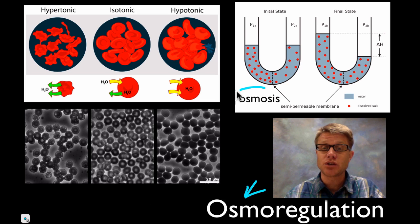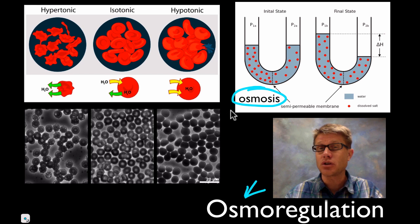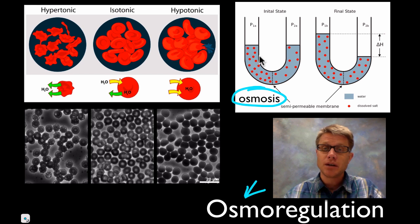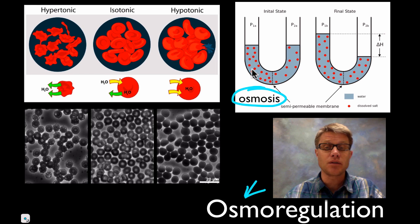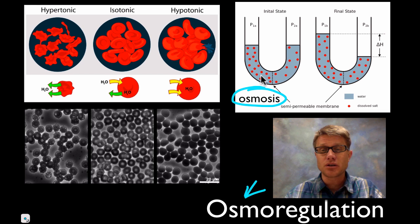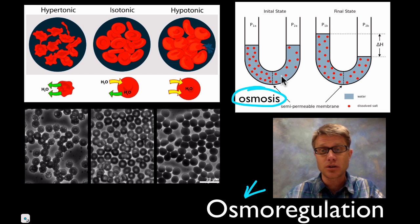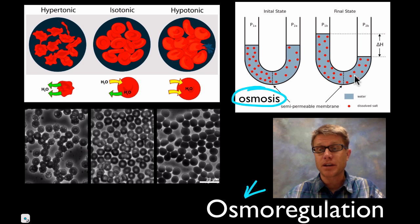Before we get into osmoregulation we should define what osmosis is. Remember that is the diffusion of water across a semi-permeable membrane. So let's say we have this tube and on one side we have a high molarity — a lot of sugar. On the other side we don't have as much. The sugar would love to spread out but it can't fit through the semi-permeable membrane. But the water can.